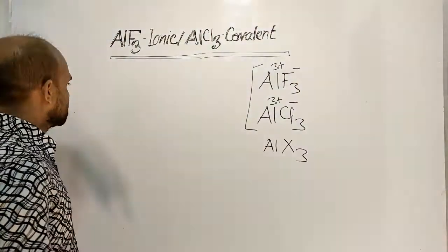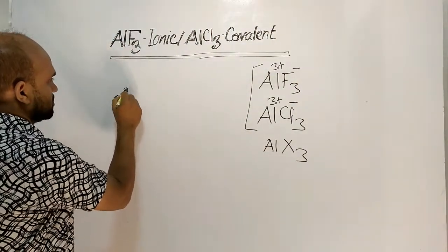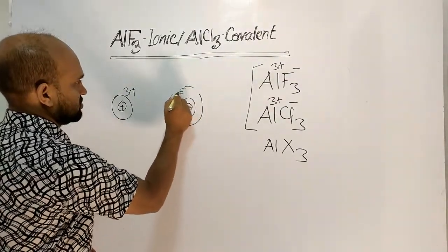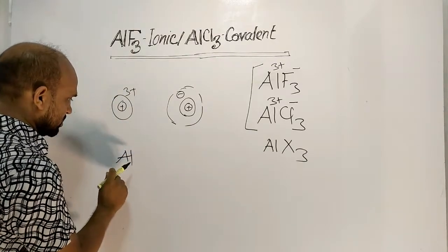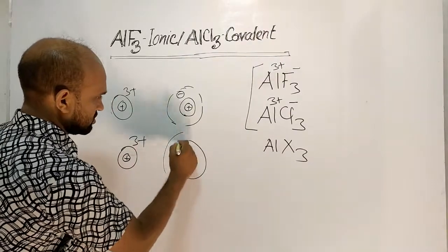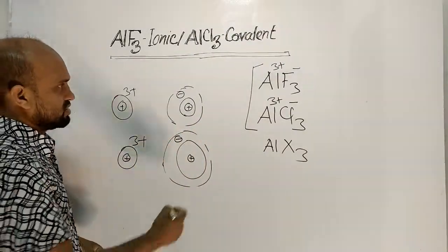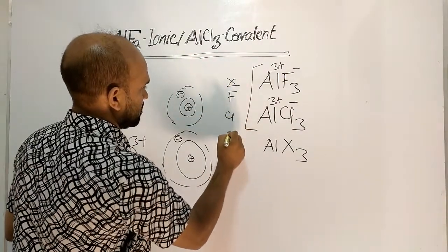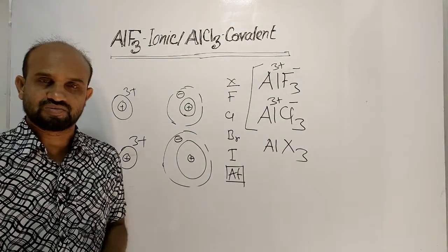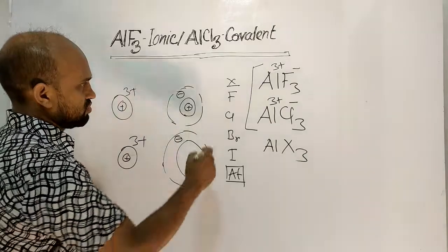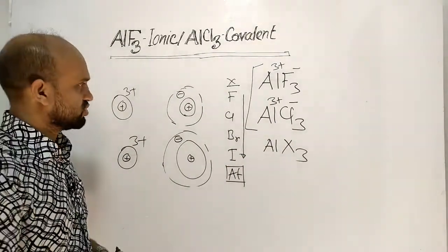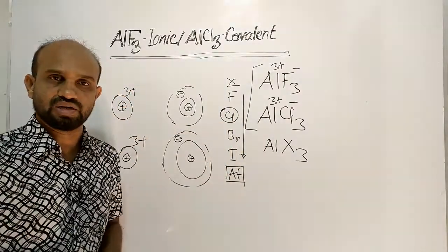Here we have aluminium 3+ with fluorine and its electron cloud, and aluminium 3+ with chlorine and its electron cloud. The halogens are fluorine, chlorine, bromine, iodine, and astatine — astatine is radioactive so it is kept out of consideration. From top to bottom along a column in the periodic table, atomic sizes increase, so chlorine is bigger in size than fluorine.